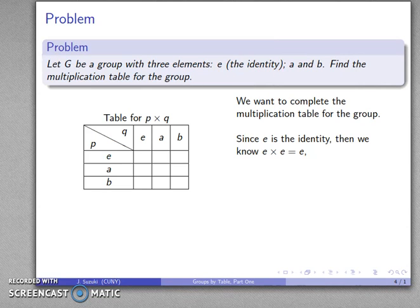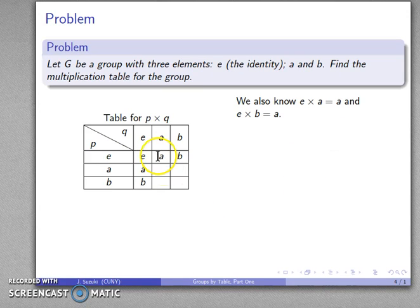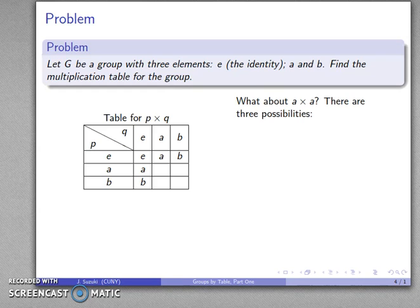Our assumption is that E is the identity, so E times E has to be E. Because E is the identity, A times E has to be A, and B times E has to be B, so we can fill in those entries. Similarly, E times A has to be A and E times B has to be B. The column and row corresponding to multiplication by E are predetermined by the fact that E is the identity, giving us quite a bit of the table already.